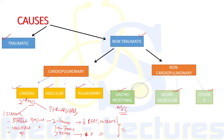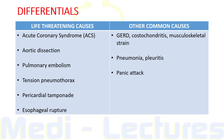While considering differentials, always keep in mind the life-threatening causes which must be ruled out first. These include ACS, aortic dissection, pulmonary embolism, tension pneumothorax, pericardial tamponade, and esophageal rupture. Other common but less serious causes include GERD, costochondritis, musculoskeletal strain, pneumonia, pleuritis, and panic attack. Our first job is to rule out what can kill the patient, then consider less urgent possibilities.